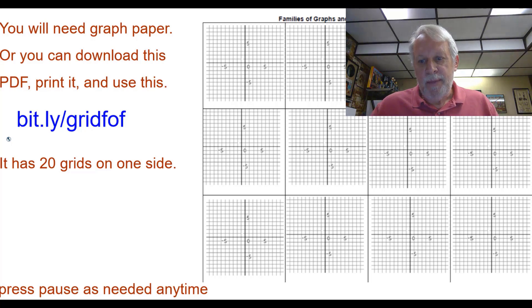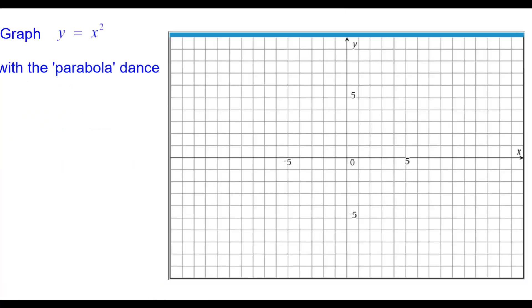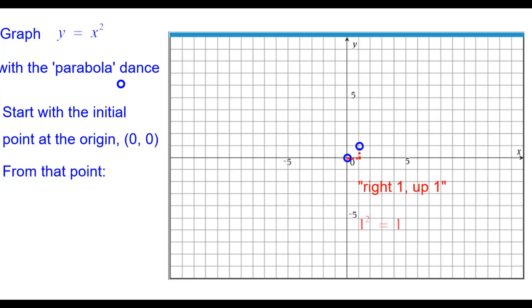Graph y equals x squared with what we call the parabola dance. We'll start with the initial point at the origin, (0,0), because zero squared is zero. From that point, right one, up one, because one squared is one.